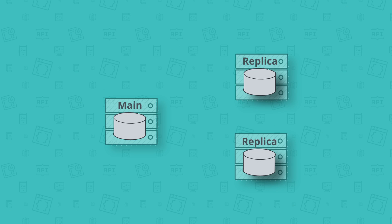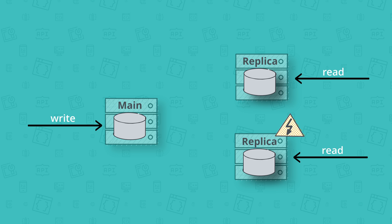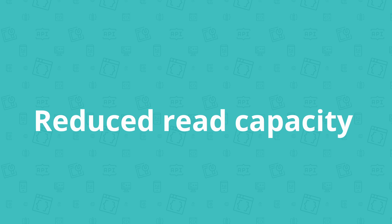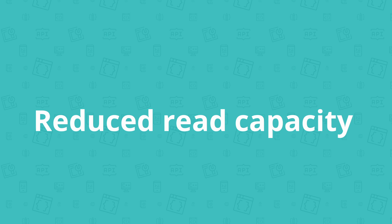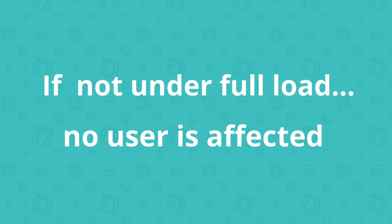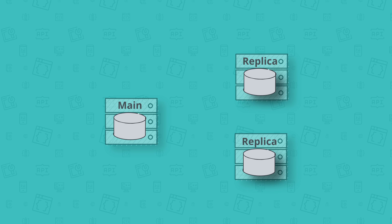Now let's look at a couple of failure scenarios to better understand how this replication pattern works in critical situations. Let's start with the case that a replica node crashes. The traffic that would have been served by that node will be rerouted to other replicas, which increases their load and reduces maximum read capacity. But as long as the system isn't under full load already, the user isn't affected at all. The straightforward response is to simply spin up a new replica node to replace the faulty one.